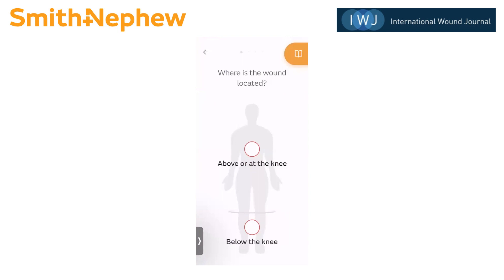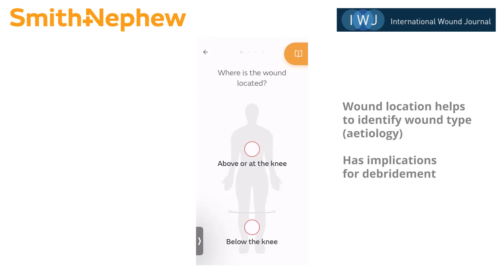This will take us to our first question: Where is the wound located? Since this is not a documentation tool, we really only want to know the important locations — at or above the knee and below the knee. This serves two purposes. The next screen will ask the user to identify the wound type or etiology, and if they've selected above or at the knee, it will eliminate those arterial, venous, and neuropathic ulcers. The other purpose is for debridement — for example, dry intact eschar on the lower leg may not be debrided if there's no adequate arterial flow.